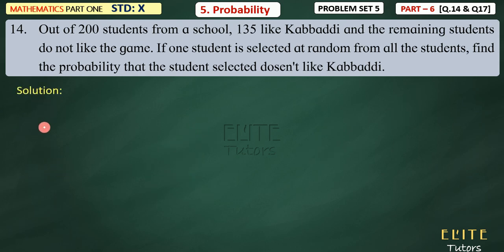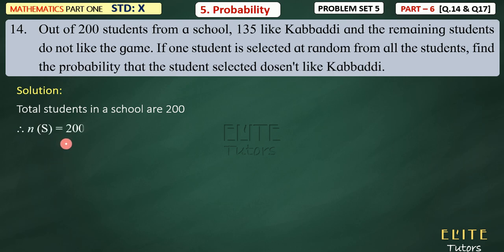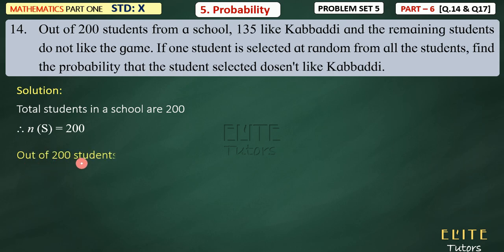Let's write the solution. Total students in a school are 200, so N(S) = 200. Out of 200 students from a school, 135 like a buddy.